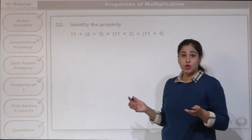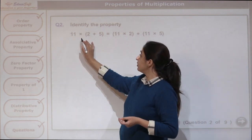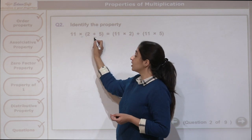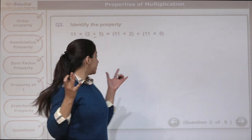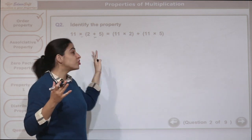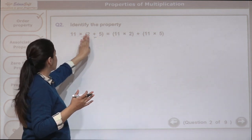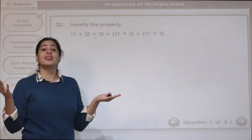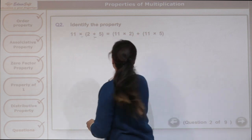Let us see the next question. We have to identify the property. What do we have? 11 times (2 plus 5). This is showing that multiplication is distributive over addition: 11 times 2 plus 11 times 5. So this is the fifth one — the distributive property.